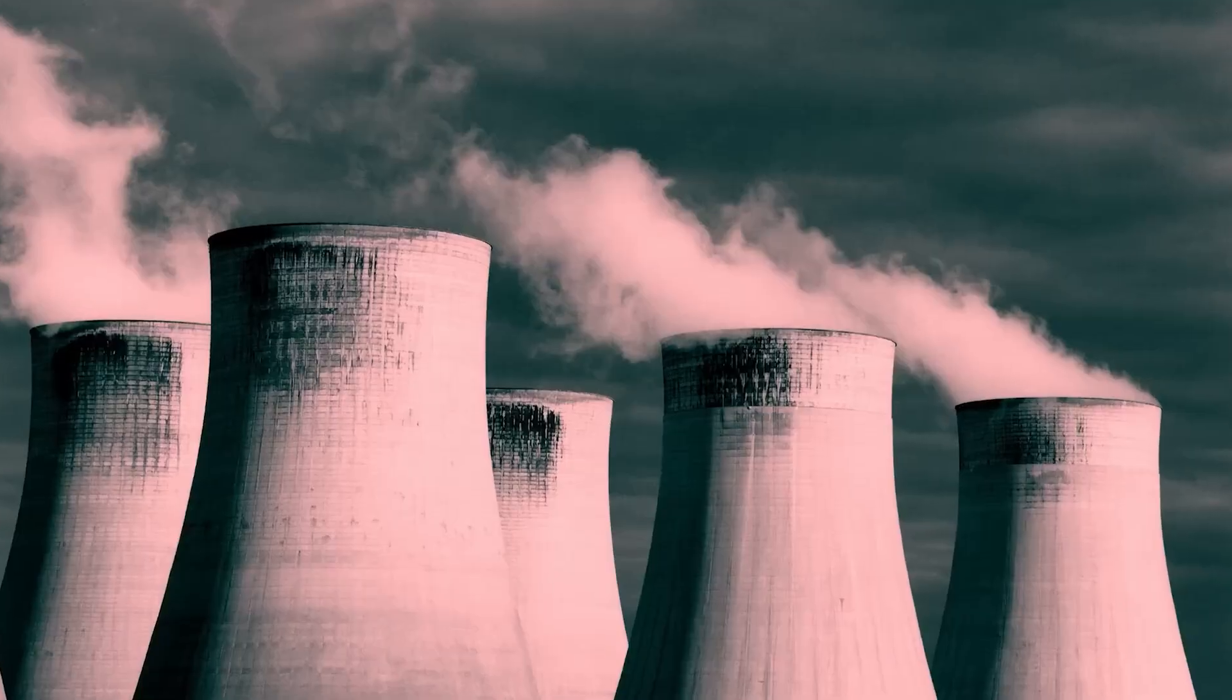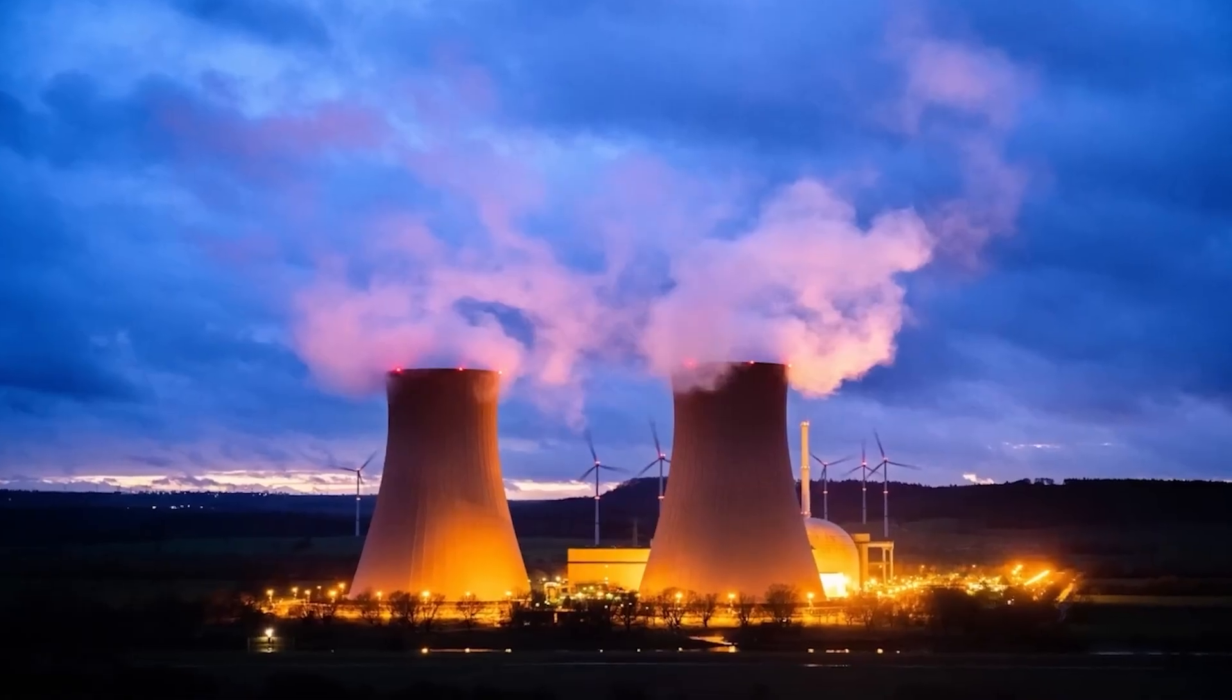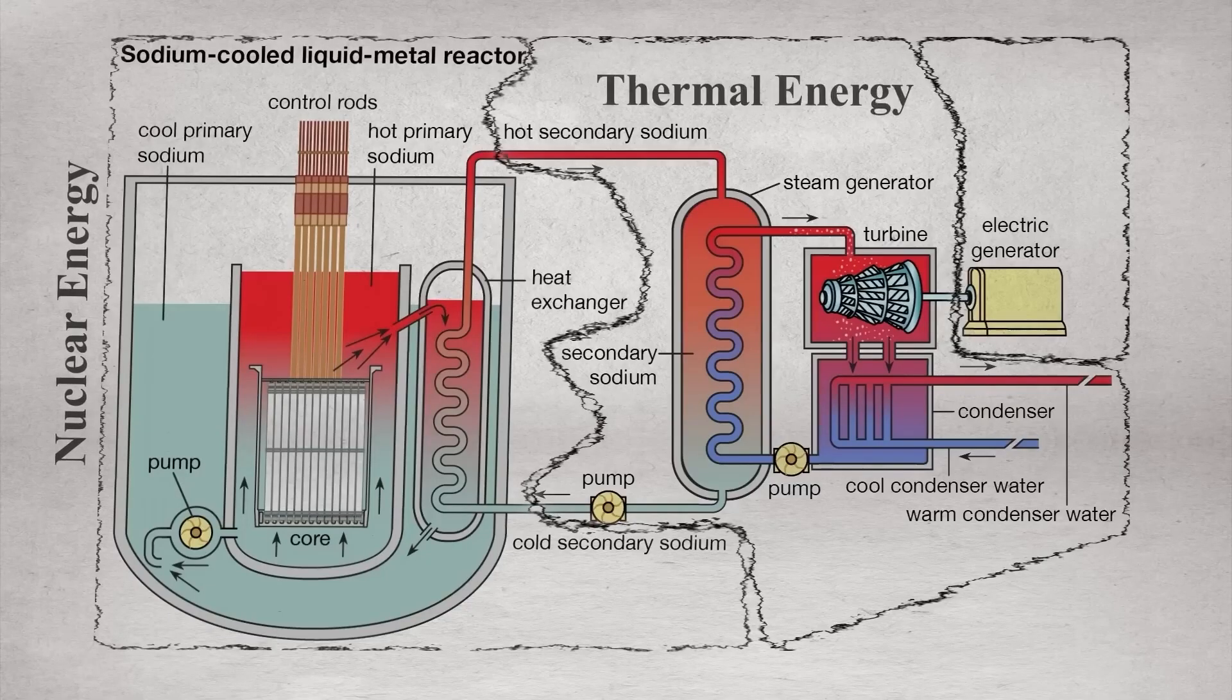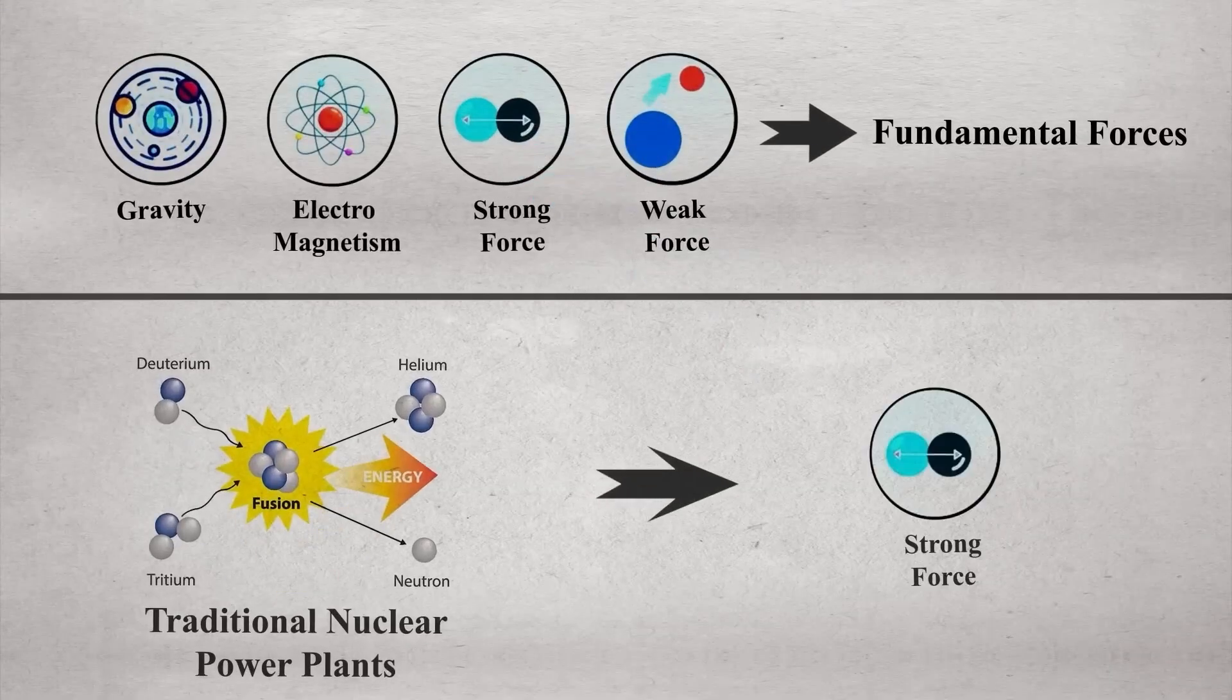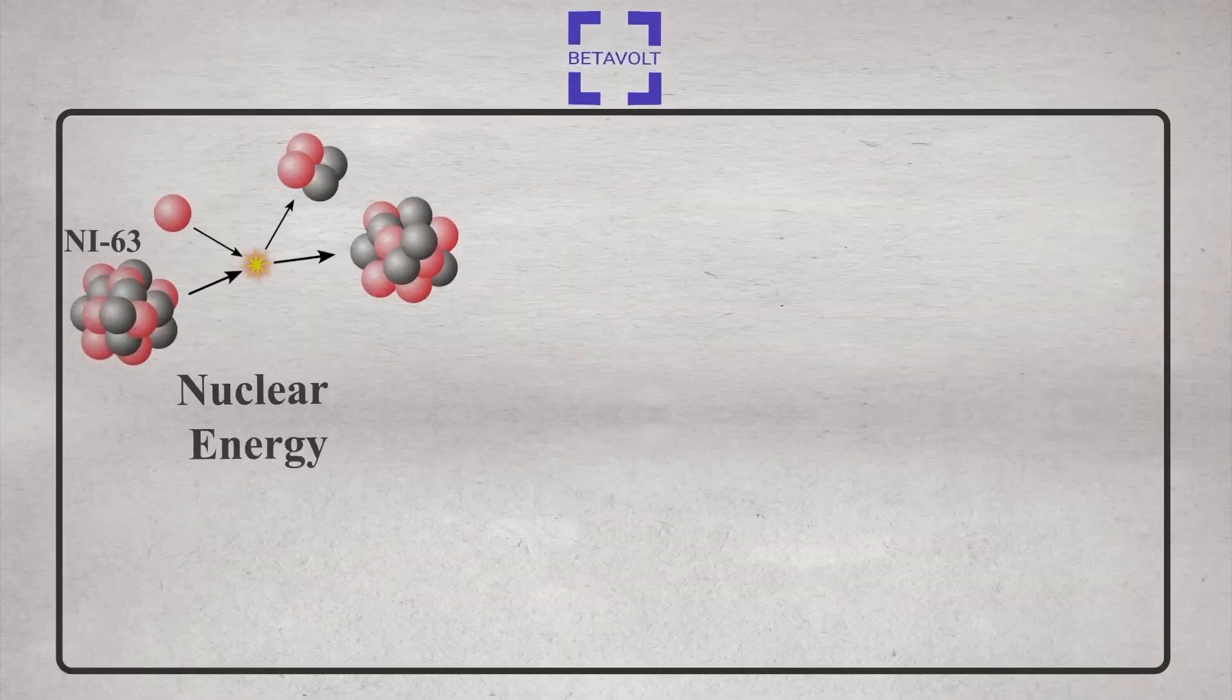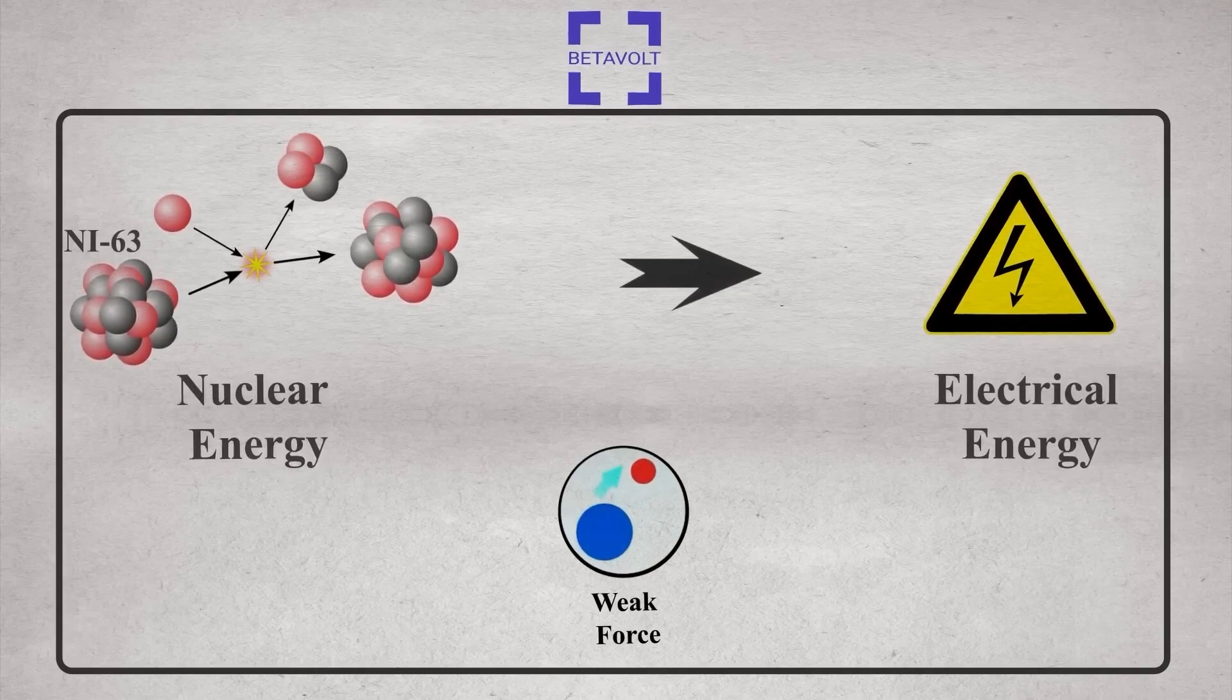But you might wonder how such a small battery, the size of a coin, can fit in nuclear power. Given that nuclear power plants usually require vast setups and thousands of safety precautions, including cooling the core by immersing it in water, and so on. The Beijing Beta Volt has achieved this by directly converting nuclear energy into electrical energy, unlike traditional nuclear power plants where nuclear energy is first converted to thermal energy and then to electrical energy. Here, Beijing Beta Volt uses weak nuclear force, the fourth fundamental force of nature, to power these batteries. Hence, these batteries are very small.